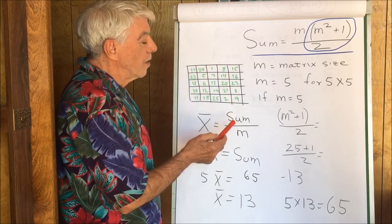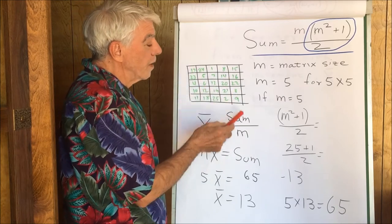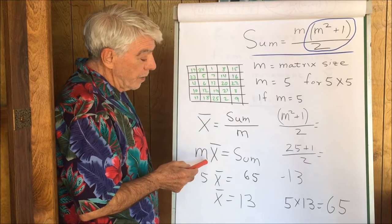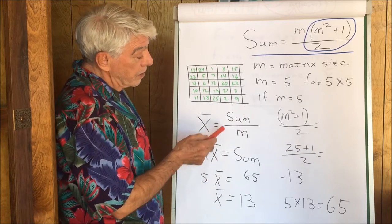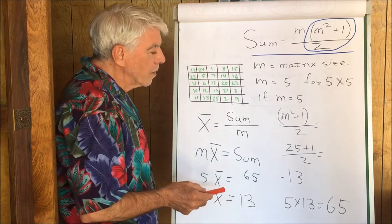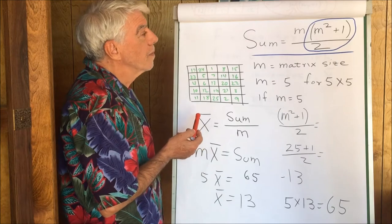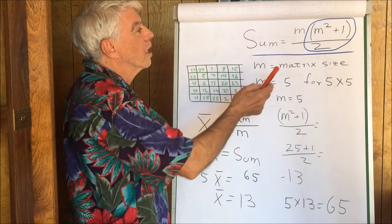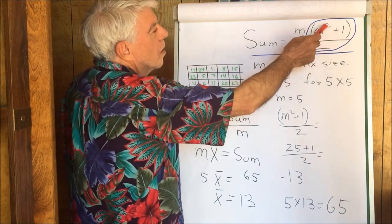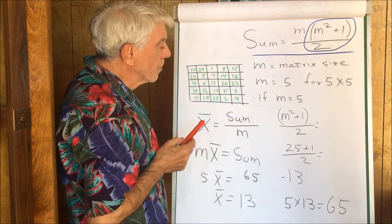So X bar is equal to the sum of the population divided by the number of elements in the population. In this case, for example here, the sum was 65 and the number of elements is 5. 65 divided by 5 gives us the 13 that we saw over here. So apparently this 13 is the X bar.